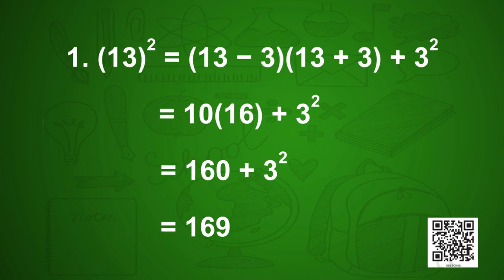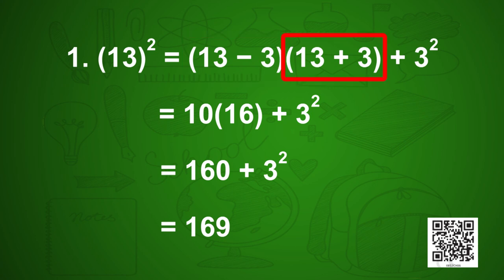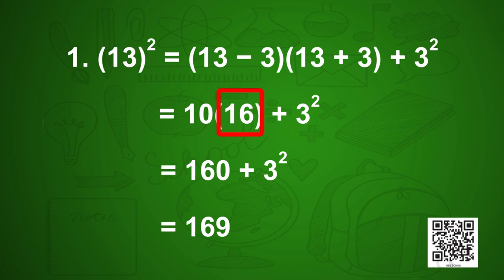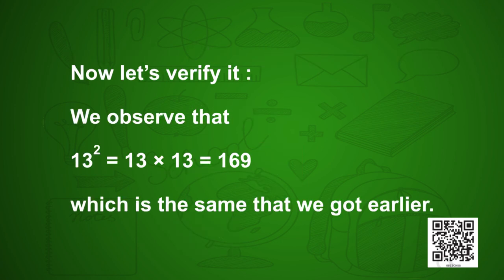Let us find 13². As per the steps, we subtract and add 3 (the units digit) from 13, getting (13 − 3)(13 + 3) + 3² = 10 × 16 + 9 = 160 + 9 = 169. Let us verify: 13 × 13 = 169, which matches.